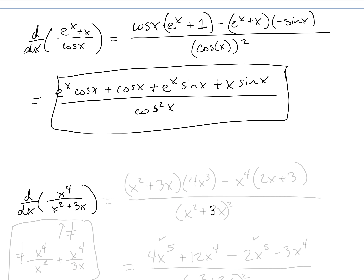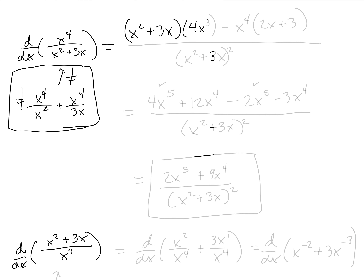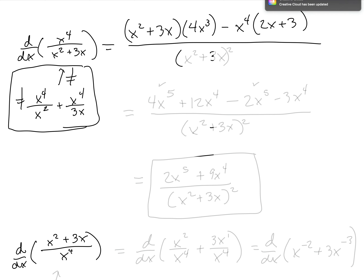Next we have x^4/(x^2 + 3x). This can't be simplified easily — you could do something with partial fractions, but it's really not worth it. Note that x^4/(x^2 + 3x) is not equal to x^4/x^2 + x^4/3x; we cannot break up the denominator. So we'll apply the quotient rule: low (x^2 + 3x), d high — derivative of x^4 is 4x^3 — minus high (x^4), d low — that's 2x + 3 — all divided by (x^2 + 3x)^2.